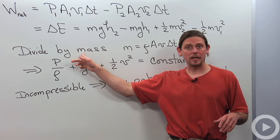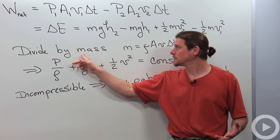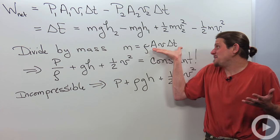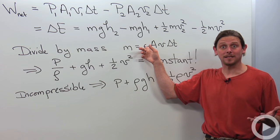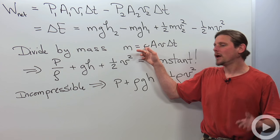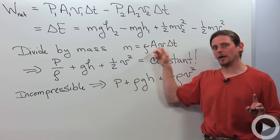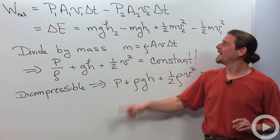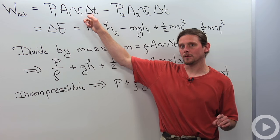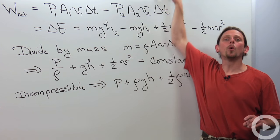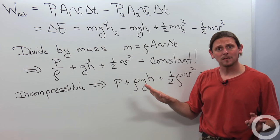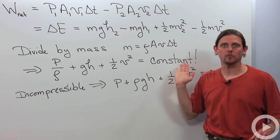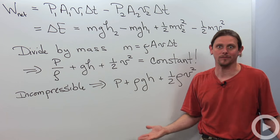The standard thing to do here is to divide by the mass. Mass equals density times volume. The volume may be different and so might the density in each place, but it's always equal to density times area times speed times delta T. When we divide by the mass, the density comes underneath here and the mass just cancels everywhere else.